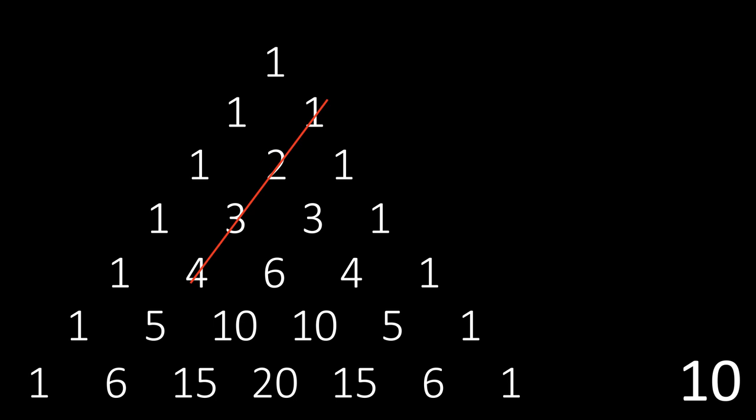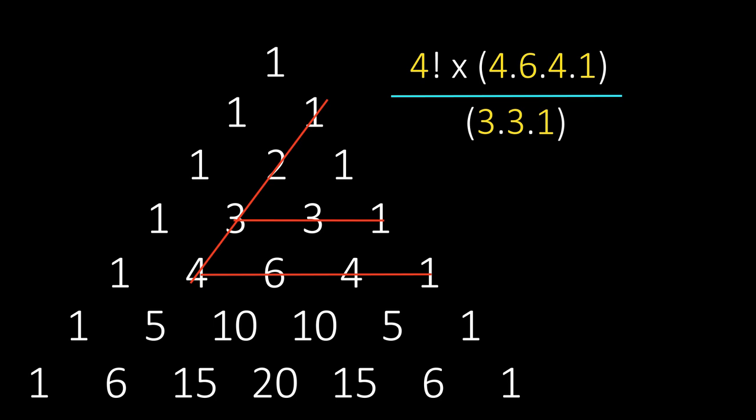We take the second diagonal, then multiply its first four elements, and then multiply it with the elements of the fourth row, and divide it with the product of elements of the third row. We get 4 raised to power 4.